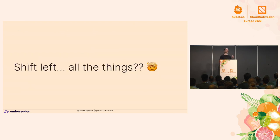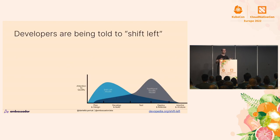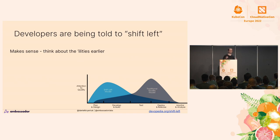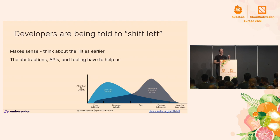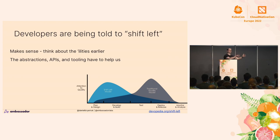Let's begin our journey. We're hearing 'shift left all the things' — that's what I'm hearing a lot from community folks and customers. We're being told, particularly as developers, we need to shift left. It kind of makes sense. Even early in my career in the 2000s, we were taught to think about the 'ilities' early — reliability, security, extensibility. But you need abstractions, APIs, and tooling to help this. The danger, if you don't have these things, is you're just shifting more responsibility onto developers. As Charity Majors jokes: you can't call yourself a full-stack engineer unless you can do React all the way through to chip design. Even the smartest of us can't hold that many abstractions in our brain.